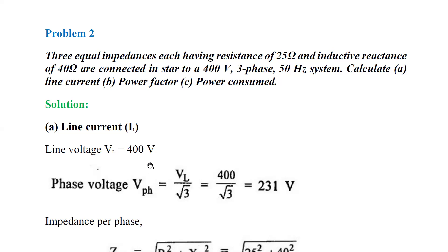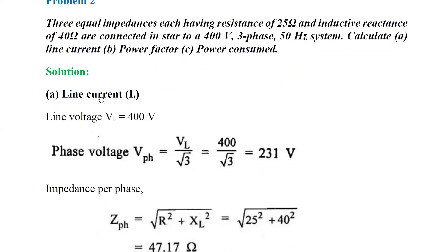They want to calculate the line current first. To find that, what is the phase voltage? Phase voltage V_phase is equal to VL divided by root 3. VL is 400, divided by root 3, gives us 231 volts.